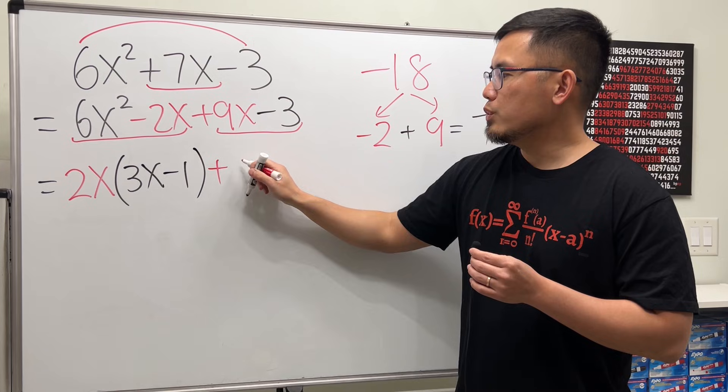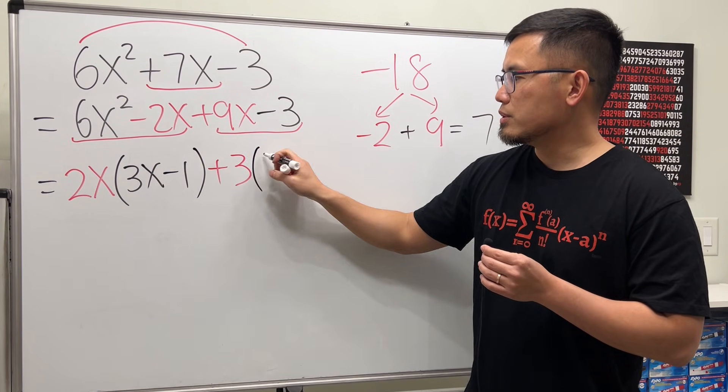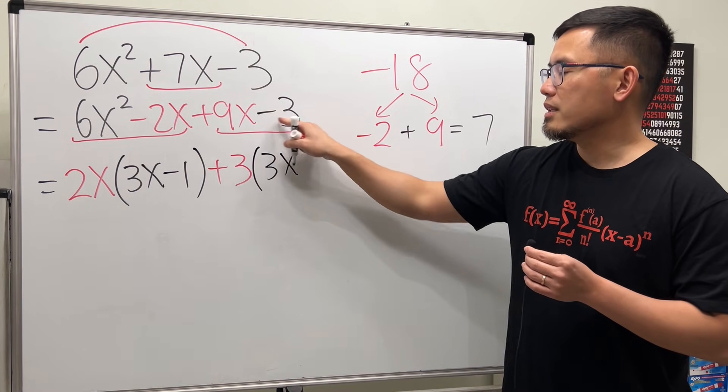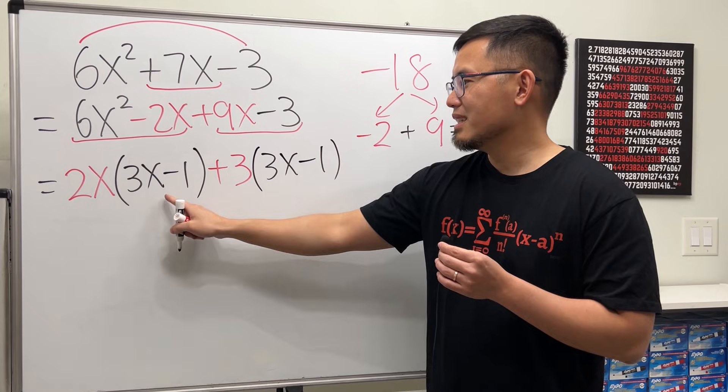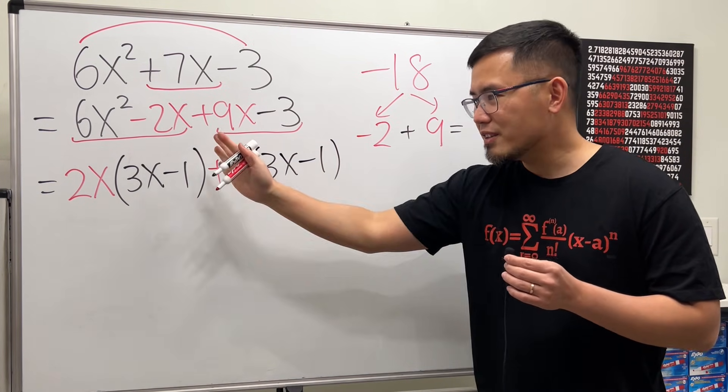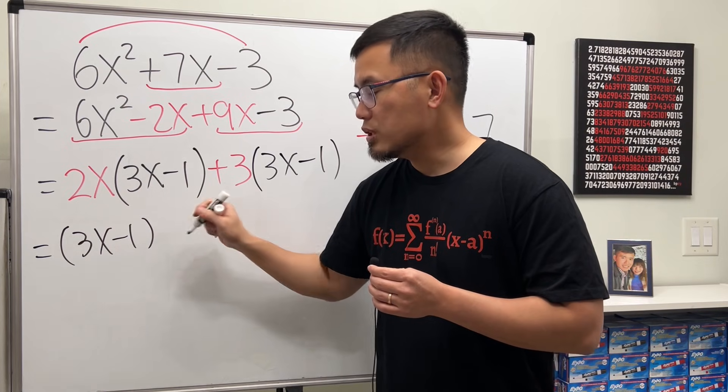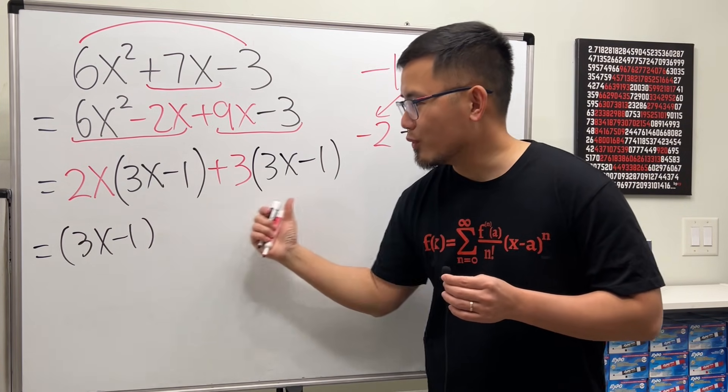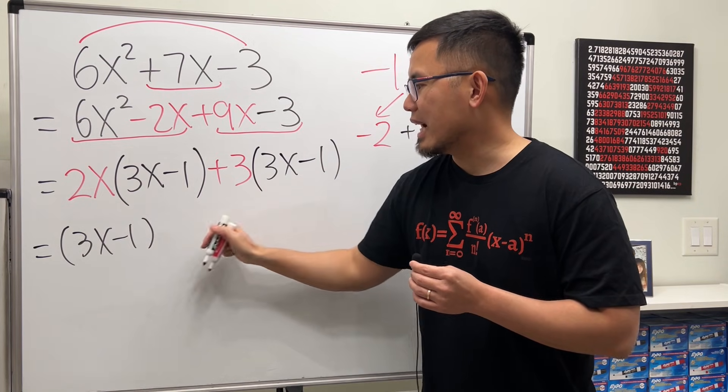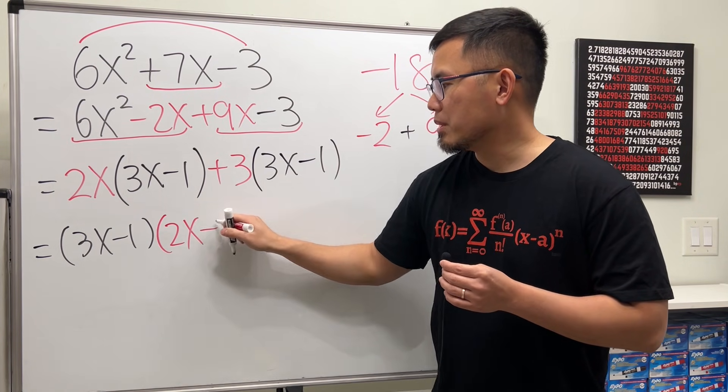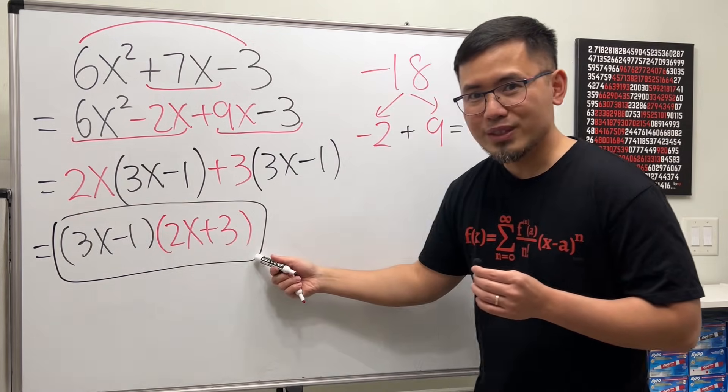9 and 3, we can factor out 3. 9 divided by 3 is 3, and then x is still right here. Negative 3 divided by 3 is minus 1. Now, as we can see, this and that are the same. We can factor that out. You have 3x minus 1, just put it down one time. And the second factor is 2x plus 3. And we got that.